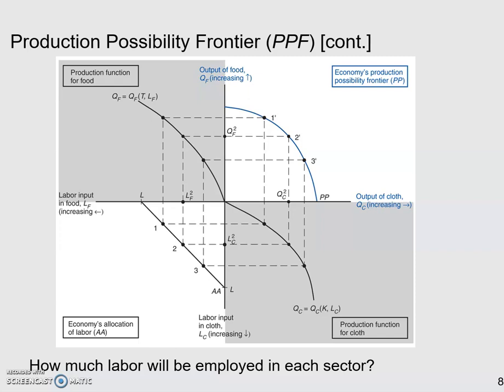Because remember here, the PPF or all of these things on the graph are actually on the producer's side. We talk about production of food and cloth, and we talk about labor as input, so input of production. Everything here is on the supply side, on the producer's side.